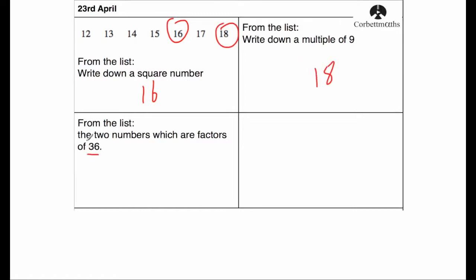And the next question says, from the list, write two numbers that are factors of 36. So 36 divided by 12 is 3, so 12 will be one factor. And the next factor will be 18, because 36 divided by 18 is 2. So two factors of 36 are going to be 12 and 18.